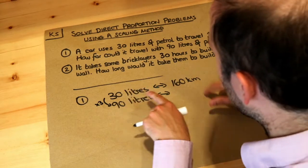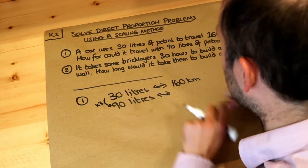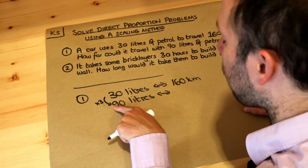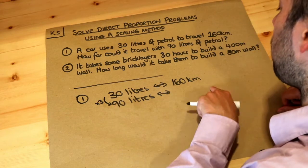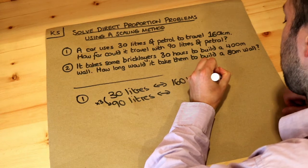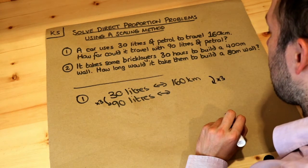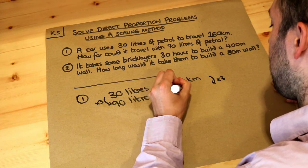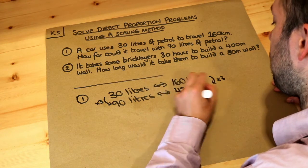So because these are directly proportional - the amount of petrol and the distance you cover - if we have three times as much petrol we go three times as far on that petrol. So we need to times distance by three as well, and 160 kilometres times by three is 480 kilometres. So that's the final answer.